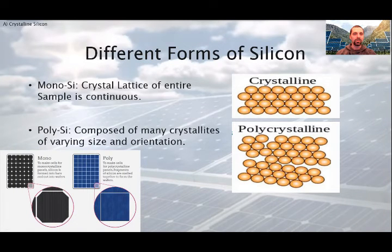This slide shows you the two first variants. In monocrystalline, the crystal lattice of the entire sample is continuous, where polycrystalline is composed of many crystallites of varying size and orientation. In the left bottom corner, you can see how can you decide from appearance which is which. Because of the different producing methods, monocrystalline cells have rounded edges and don't have bluish speckled look.